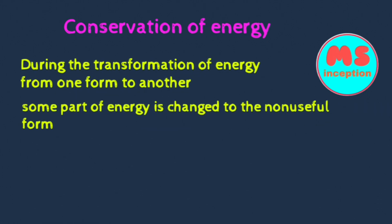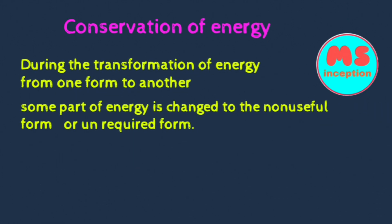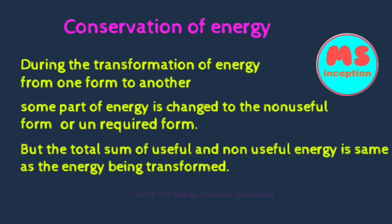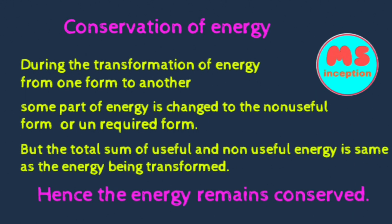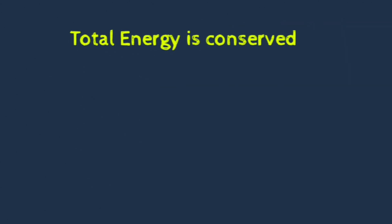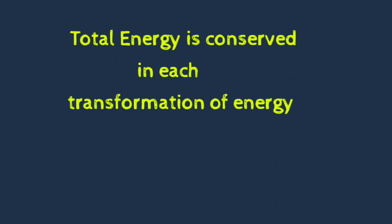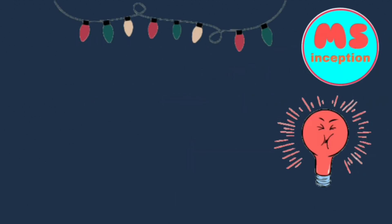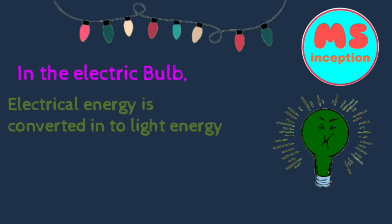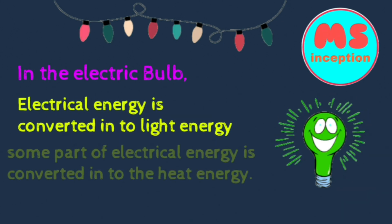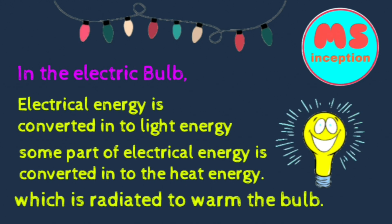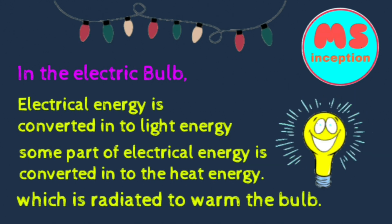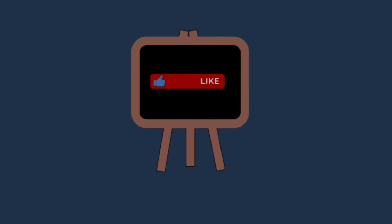During the transformation of energy, some part of energy is non-useful, but the total sum of useful and non-useful energy is the same as the total energy which is being transformed — total energy is conserved. In the electric bulb, electrical energy converts into light energy, and the non-useful energy is the heat of the bulb.